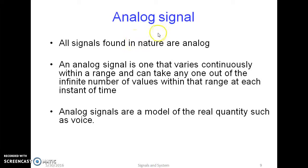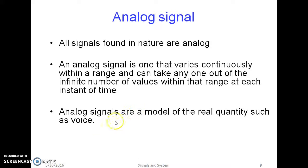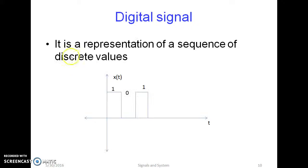Another category is analog signal. An analog signal varies continuously within a range and takes any value out of the infinite number of values within that range at each instant of time. A digital signal is a sequence of discrete values.